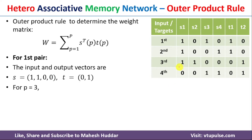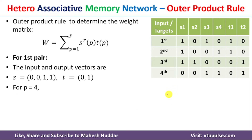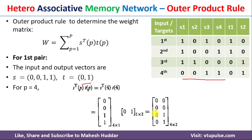For the third pair, the input is [1,1,0,0] and the target is [0,1]. With p=3, performing the same calculation gives the corresponding weight matrix. For the fourth pair, the input is [0,0,1,1] and the target is [0,1], giving us the weight matrix for the fourth input.